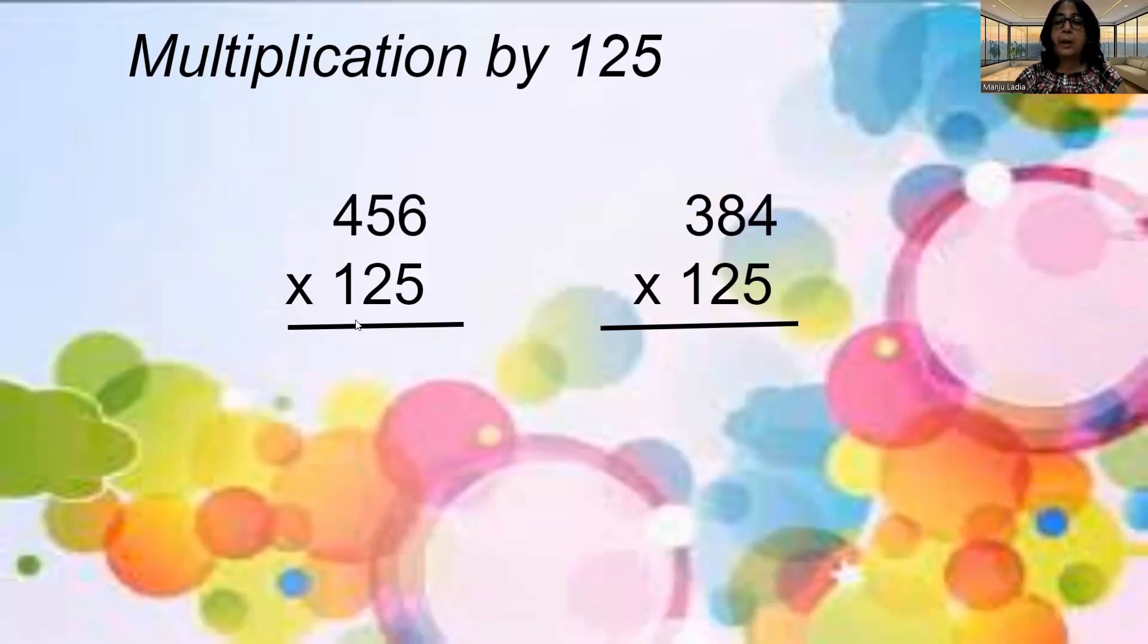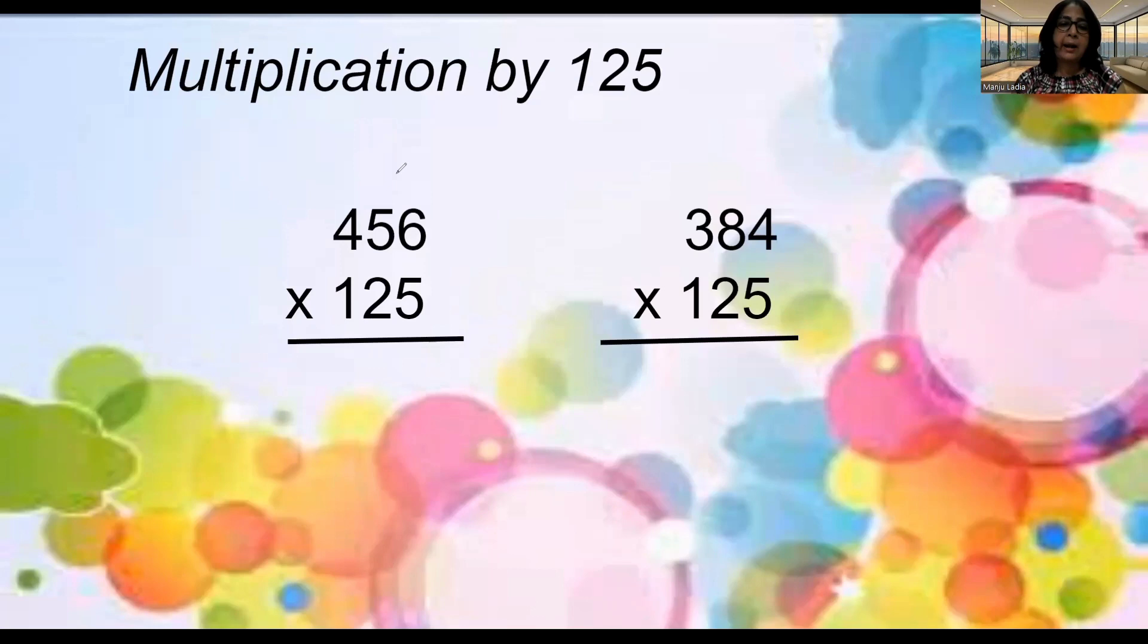456 multiplied by 125. By seeing, you all will say how hard it is. It will follow the 4 steps. How can we do? Nothing you have to do. Just you have to remember the table of 8 only, and just divide this by 8.